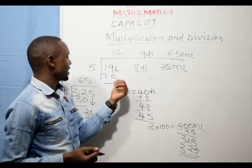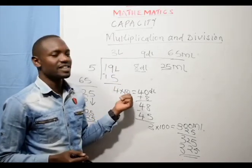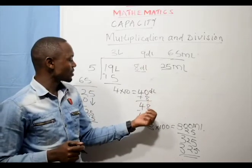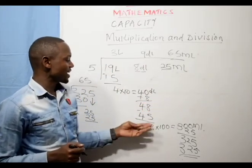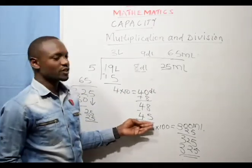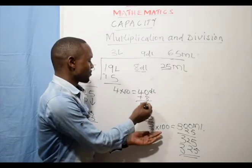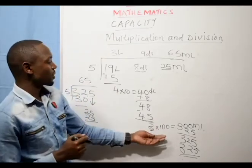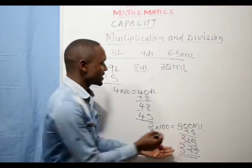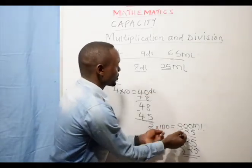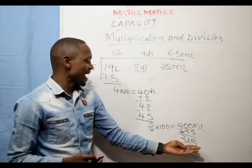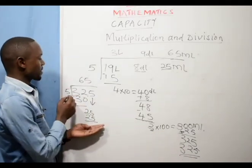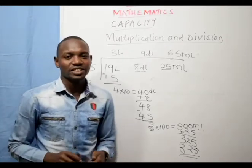Start from the liter side. Any number that remains — convert to deciliters by multiplying by 10. After converting, remember to add this 8 here. Then after adding 8, you work out now. 5 divided by 48, you get 9 times — it goes 9 times, goes off 45. Subtract from 48, you get 3. So these are 3 deciliters. Convert these 3 deciliters to milliliters by multiplying by 100. Then after multiplying, whatever you are getting, add the 25 which was on the milliliters side. So you get 325. That is what we have done on this side. We have divided 325 milliliters divided by 5 to get 65. And that is how we work out multiplication and division.